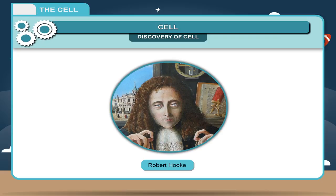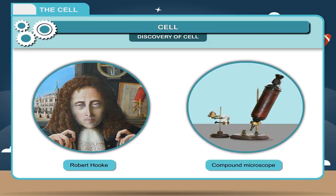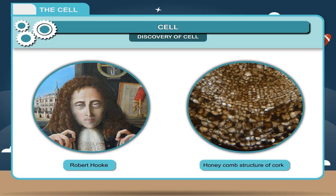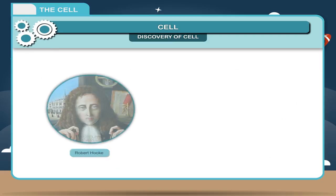Discovery of cell. Robert Hooke, 1665, first discovered a thin section of cork under the compound microscope and found that the bottle cork was made up of many small empty boxes or cavities surrounded by definite walls. He named these honeycomb structures as cells.